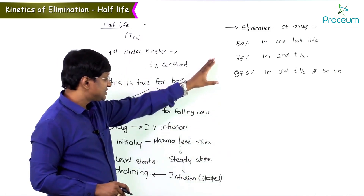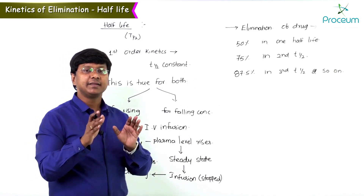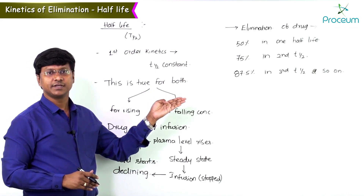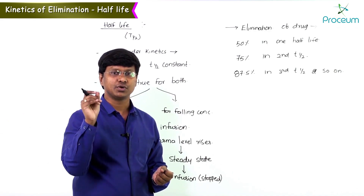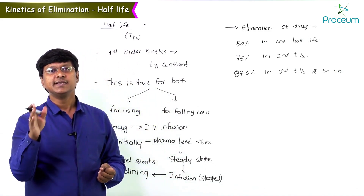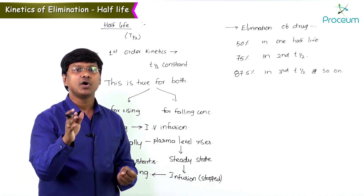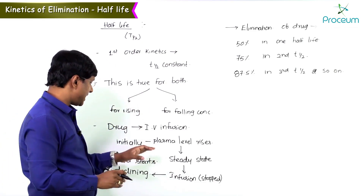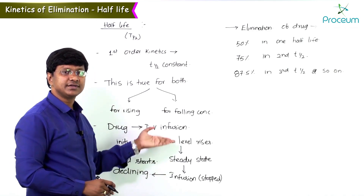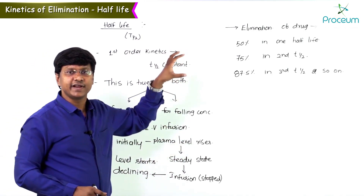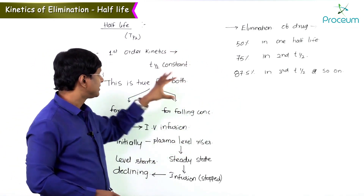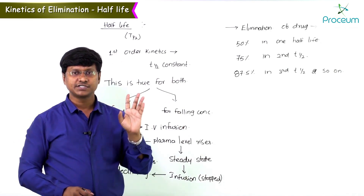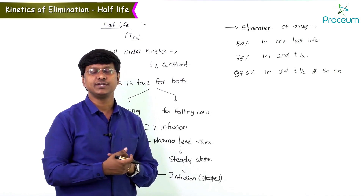This is when the level starts declining. The same is true for rising plasma concentration: with constant IV infusion, in one half-life the plasma concentration is half of the steady state, and in two half-lives it is 75%, and so on. Whether the drug level is declining or increasing, the constant fraction is maintained when the drug follows first order kinetics. Majority of drugs follow first order kinetics; only a few drugs follow zero order kinetics.